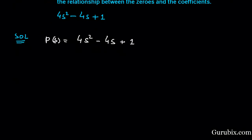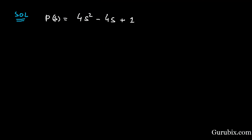Now we shall factorize this polynomial using the method of splitting the middle term. For that, we shall split the middle term such that the sum of its two factors equals the middle term itself, but the product of these two factors equals the product of the first term and the last term. So the factors are minus 2s and minus 2s, and here we have plus 1.